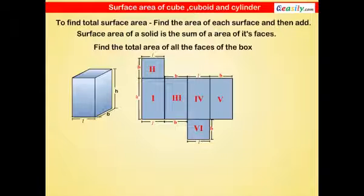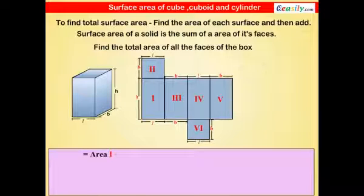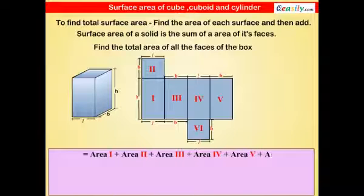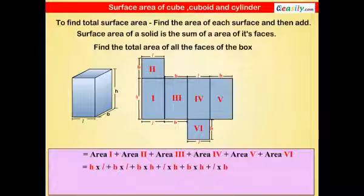Therefore, the total area of the cuboid is area of surface 1 plus area of surface 2 plus area of surface 3 plus area of surface 4 plus area of surface 5 plus area of surface 6, which equals H×L + B×L + B×H + L×B.